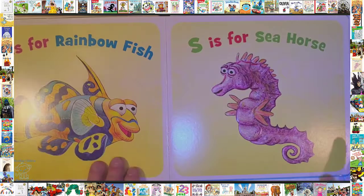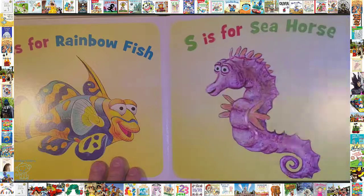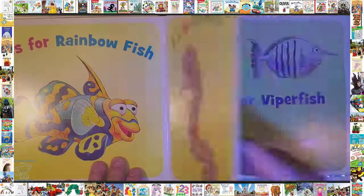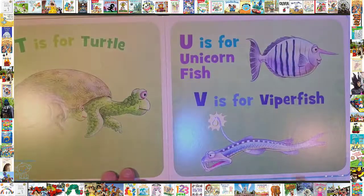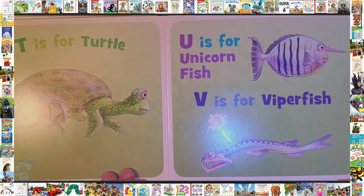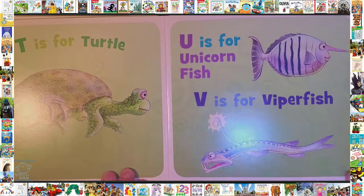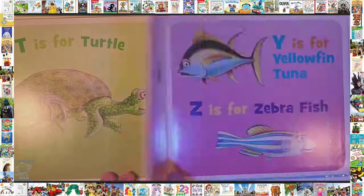S is for Seahorse. T is for Turtle. U is for Unicorn Fish. V is for Viper Fish.